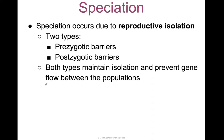Both types maintain isolation and prevent gene flow between populations. Gene flow increases genetic diversity by increasing the depth and width of the gene pool in a species — these barriers prevent that from happening.